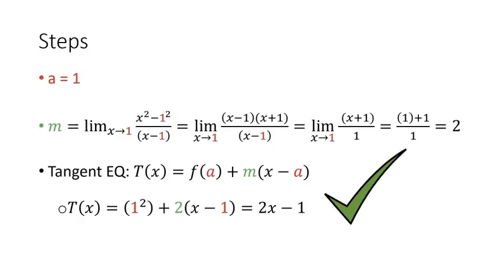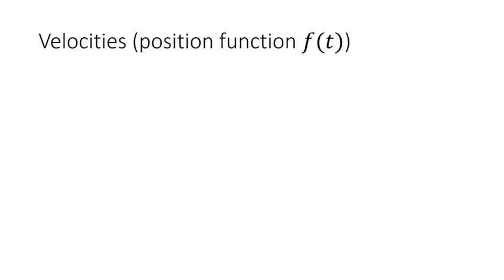Now let's look at how we can find velocities based on a position function, where f is a function of time. There are two velocities we can find. The first is average velocity. For this, the numerator is just our position function, minus that function evaluated at some initial time, over t minus that initial time.